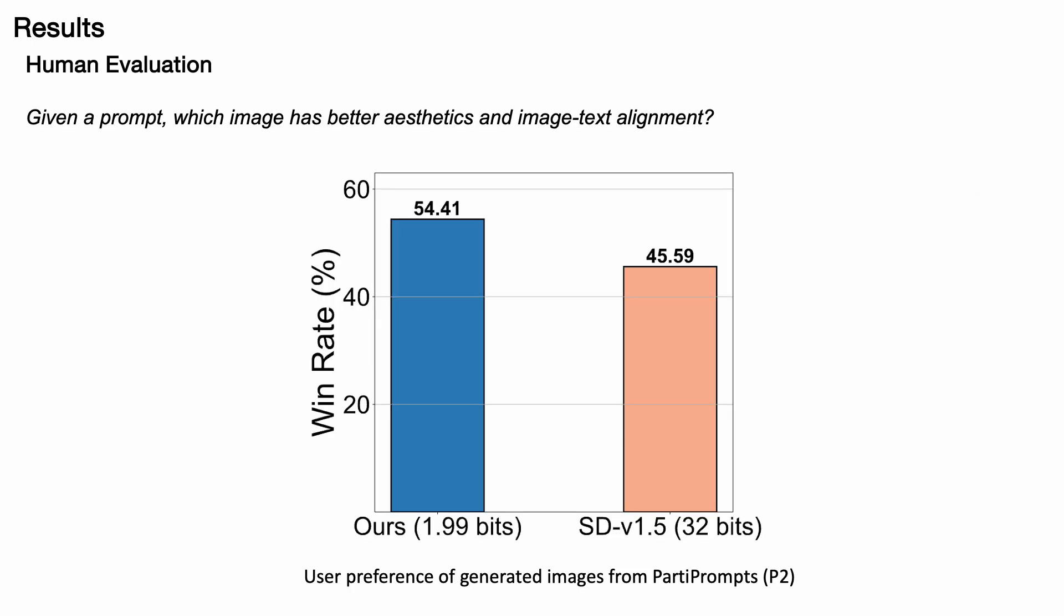We also measured user preferences using party prompts. Participants were asked, given a prompt, which image has better aesthetics and image text alignment? A majority of 54.41% of users preferred our model, indicating it outperforms the full precision model.